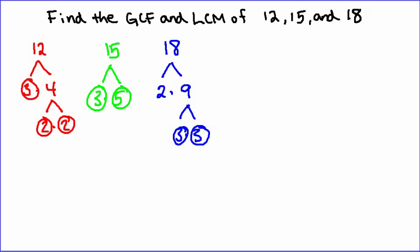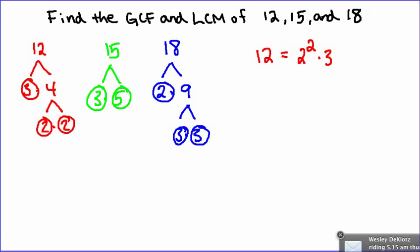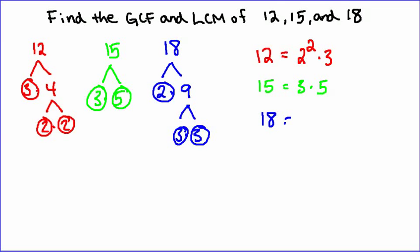Now I'm going to write these all out using exponential form. So 12 is equal to 2 squared times 3. 15 is equal to 3 times 5. And 18 is equal to 2 times 3 squared.